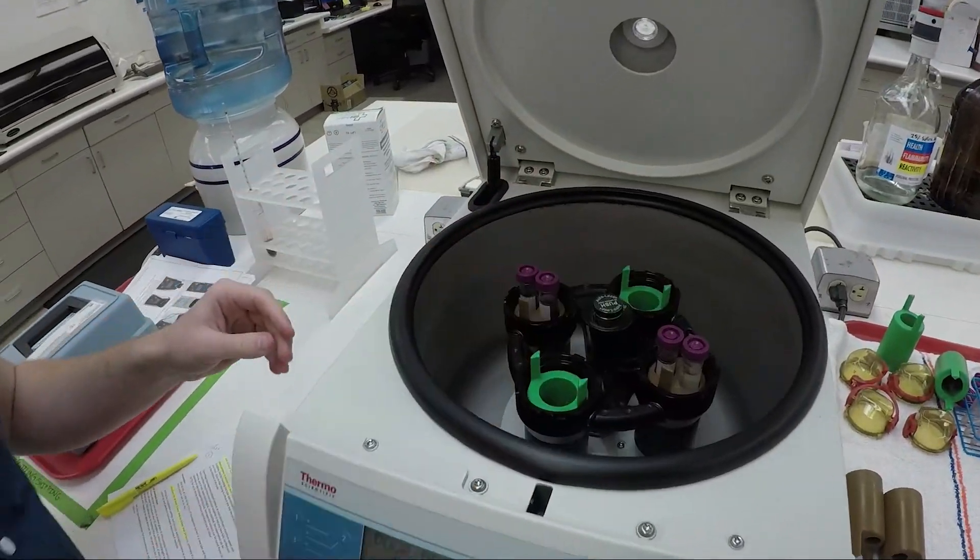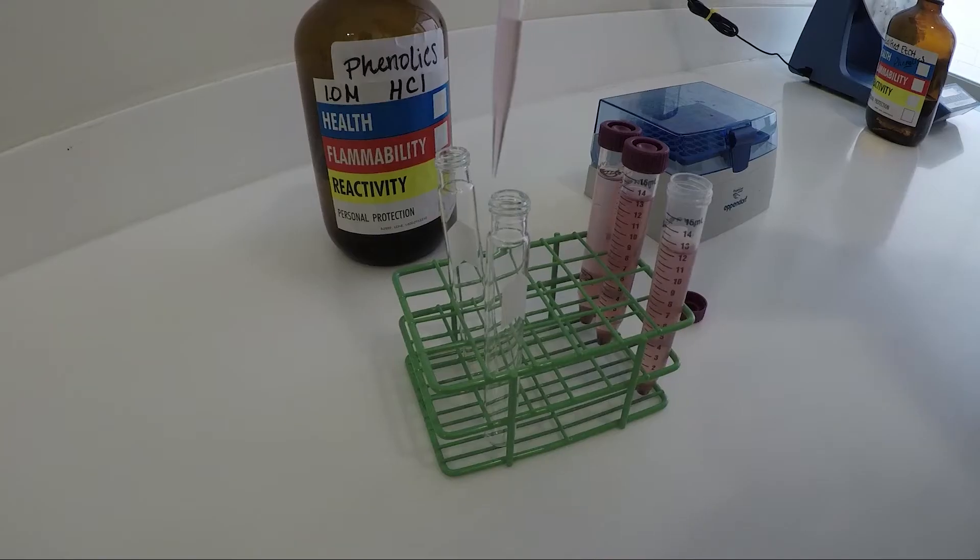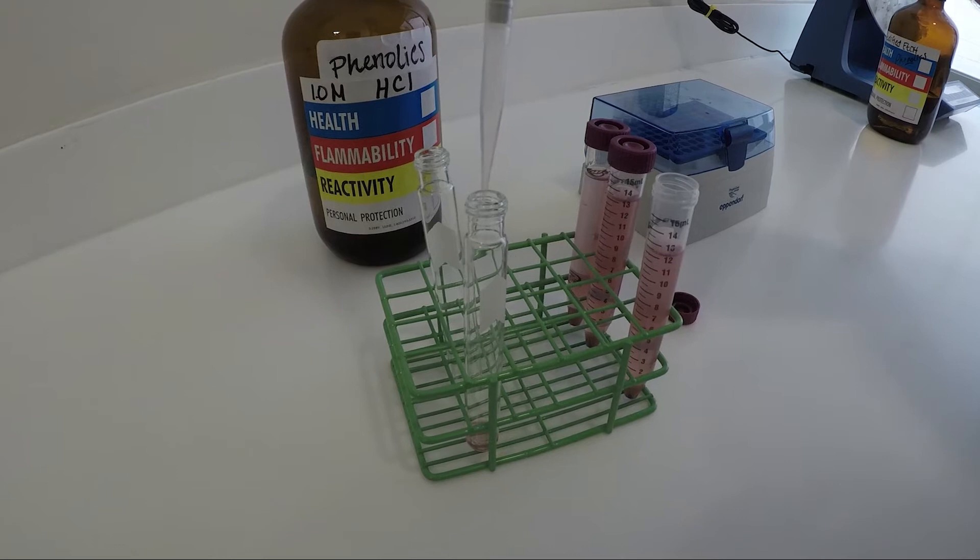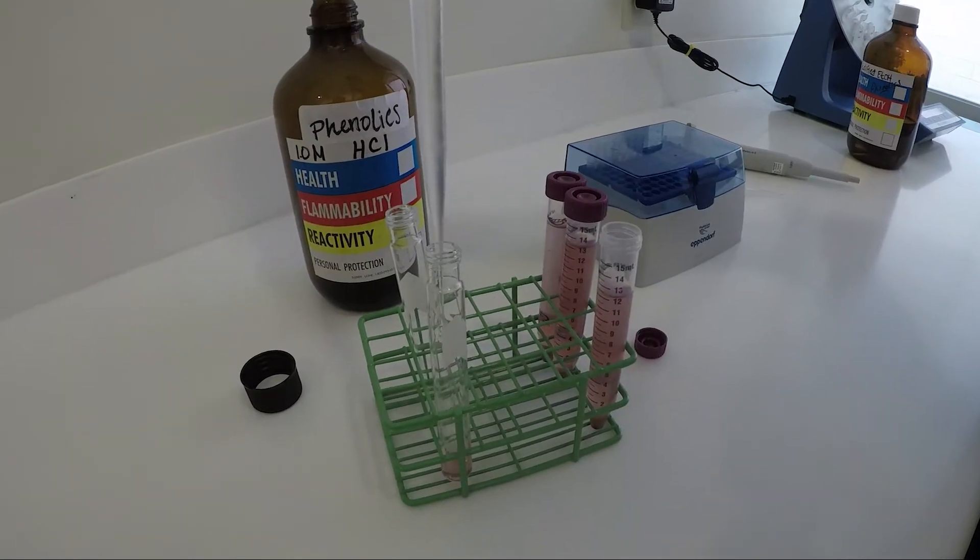After the extraction we'll centrifuge our sample. We'll dilute one mil of our supernatant into 10 mils of one molar hydrochloric acid. Now that we've added 10 mils of HCL to one mil supernatant, we're going to incubate for one to 24 hours in a cool dark place.